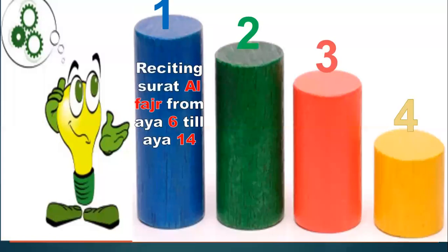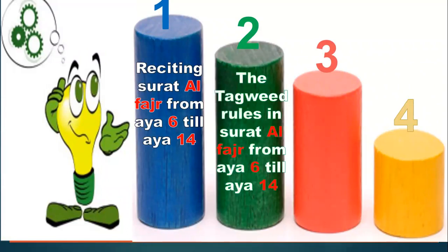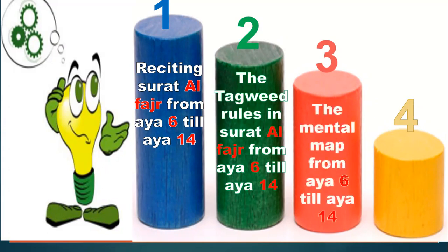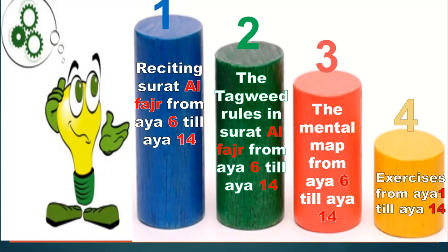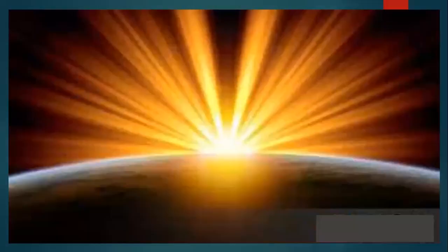Number one: reciting Surah Al-Fajr from Ayah 6 to Ayah 14. Number two: studying the Tajweed rules in Surah Al-Fajr from Ayah 6 to Ayah 14. Number three: the mental map — mental map means Al-Kharita Al-Zihniya. Number four: exercises about Surah Al-Fajr from Ayah 1 to Ayah 14. Let's go to the first part.